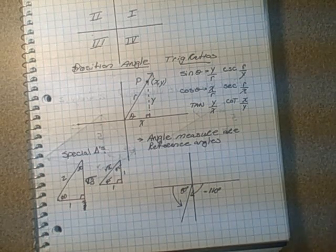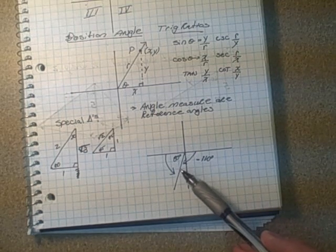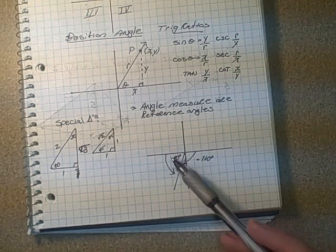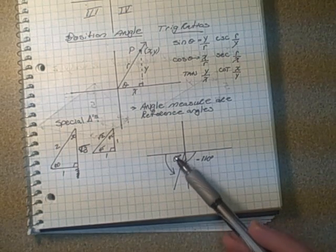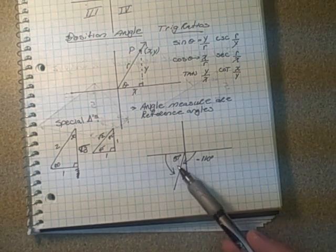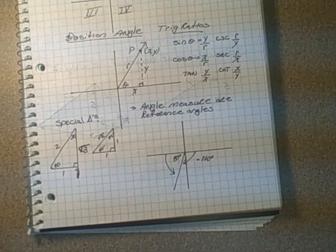Again, when you're drawing angles and making reference angles, if I had an example like this, this is negative 110 degrees here, then my reference angle that I would use is the one that's forming with the x-axis and a positive x-axis angle being 80 degrees in that case. So that's how we'll be using those reference angles.